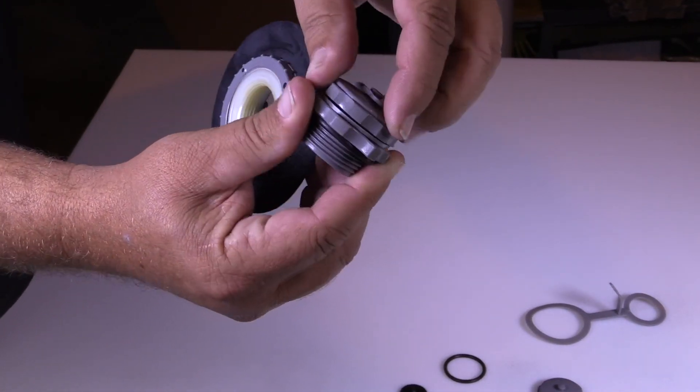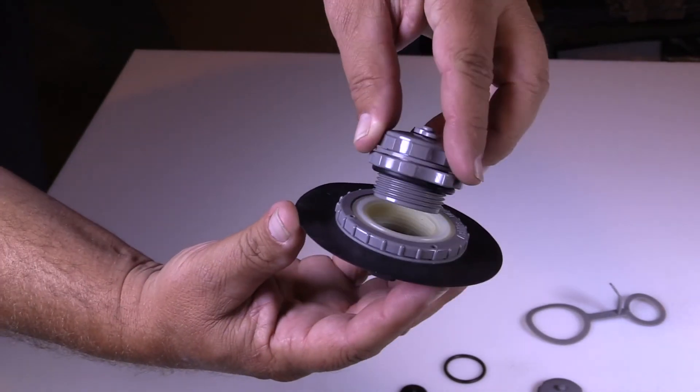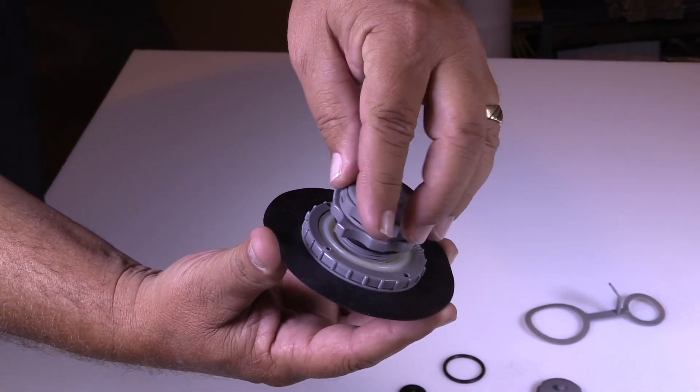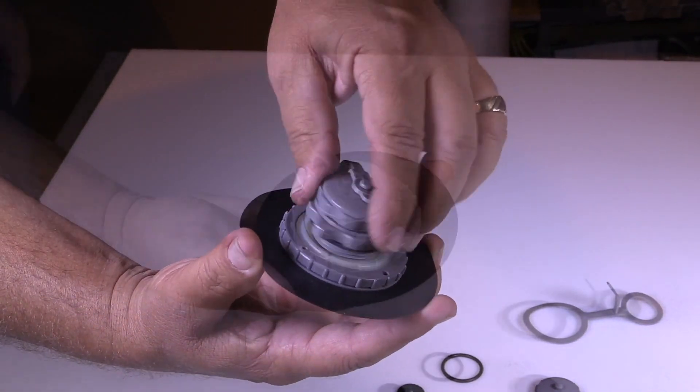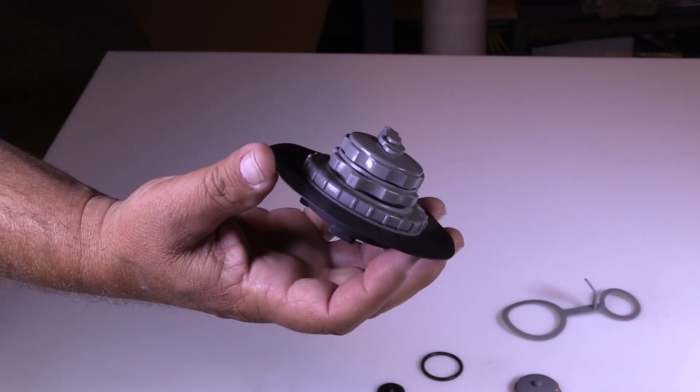So the cap screws on the top, and then the valve screws into the base that's glued into the boat. That's the Achilles valve system.